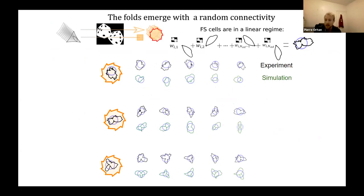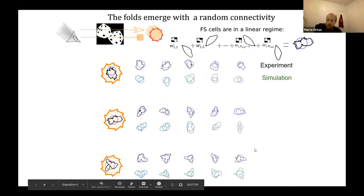And we found out that the random connectivity was perfectly explaining the phenomenon. Fast-spiking cells are known to work in a linear regime, meaning we can write their tuning curves as the sum of the weighted tuning curves of the inputs. The weights are positive or negative and picked randomly. Remarkably, as you can see in the bottom, we observe that the experimental tuning curves, in black, are well reproduced by the simulated ones, in green. We observe one-folded, two-folded, three-folded cells.